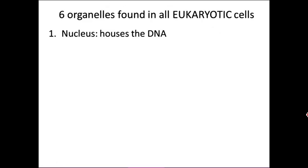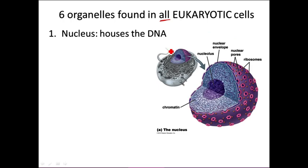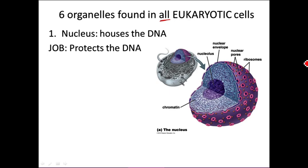There are six organelles found in all eukaryotic cells — both animals and plants. The first is the nucleus, which houses the DNA. It's really important because its job is to protect the DNA, which contains the genetic information — the blueprint for life, with all the instructions for that cell to stay alive. If the DNA becomes damaged or mutated, or is lost altogether, the cell will either malfunction or cease to exist.